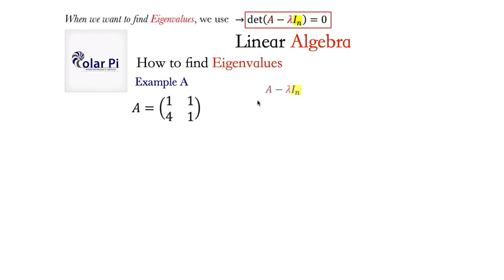Well, A is this matrix. Lambda is a scalar. And remember, the lambdas are the eigenvalues and so that's what we're after. And I sub n is the n by n identity. And since A here is a 2x2, I sub n is a 2x2 identity.